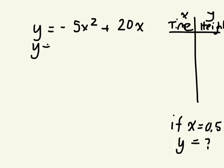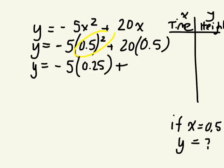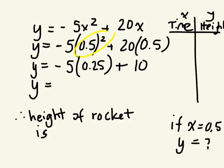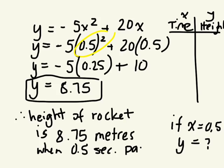We're going to solve for y. If x is 0.5, what is y? You must do your exponents first. The common error people make is they multiply the negative 5 by that. That's wrong. We do that after. So in half a second, it went 8.15 meters above the ground.